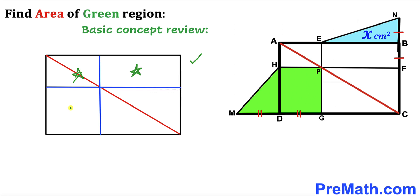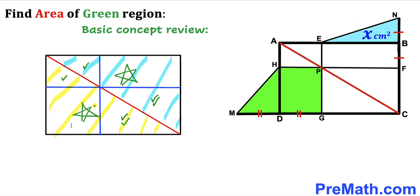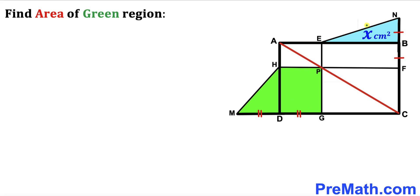We can see that this triangle area is going to be equal to this triangle area in this rectangle. Likewise, this triangle area is going to be equal to this triangle area in another rectangle, and this blue triangle area is going to be equal to this yellow triangle area.